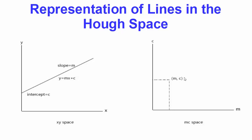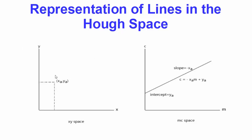When you represent a simple line in the MC space or Hough space, it can be represented as a single point. A line is a collection of points, and managing a collection of points is tougher than managing a single point. So the MC space represents a line in the form of a point. The opposite is also possible: a point in XY space can be represented as a line in MC space.